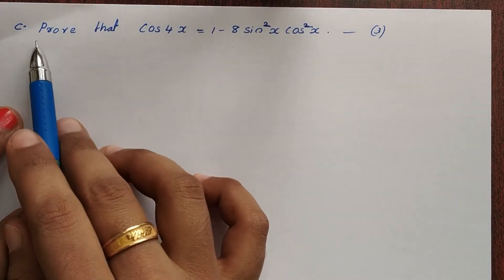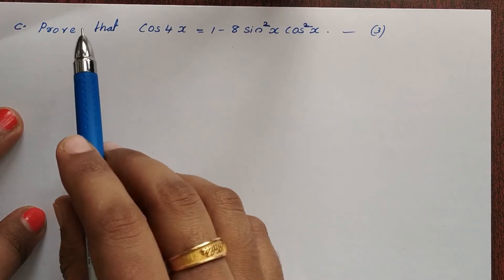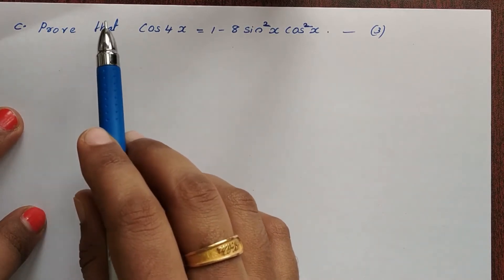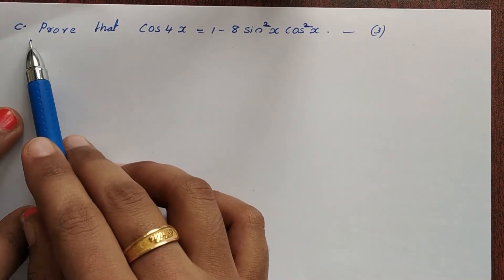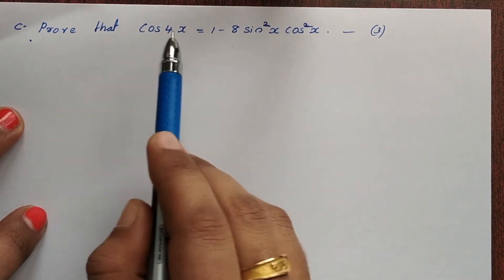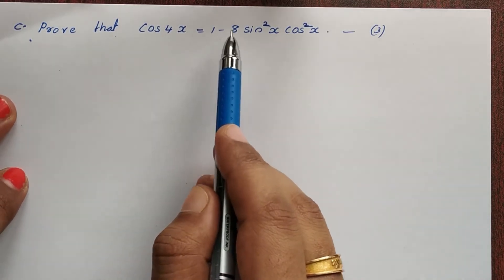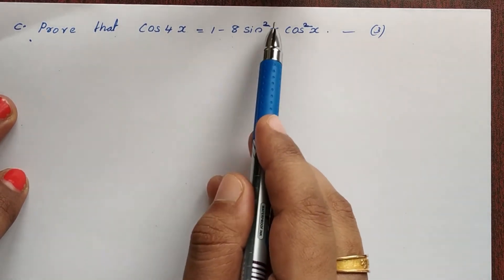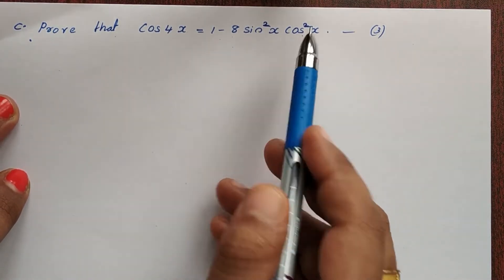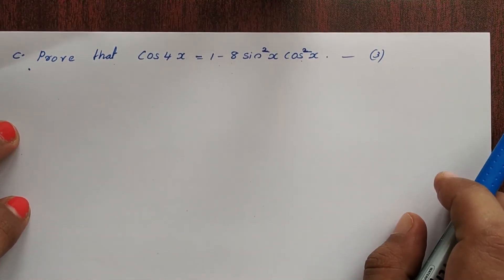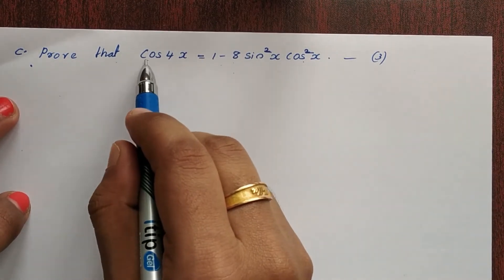Next problem, part A and B. Prove that cos 4x equals 1 minus 8 sin²x into cos²x.